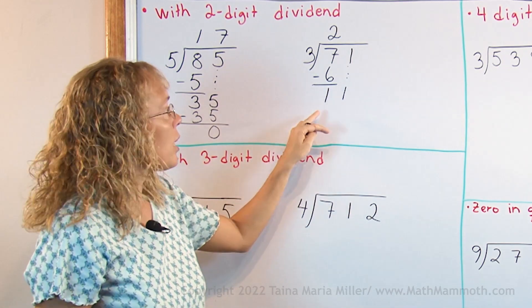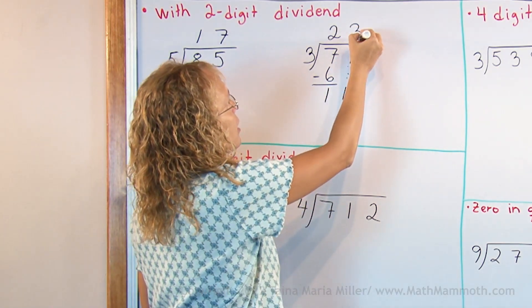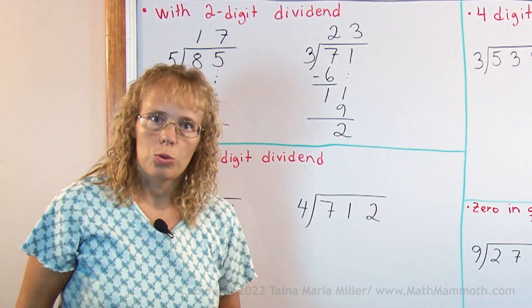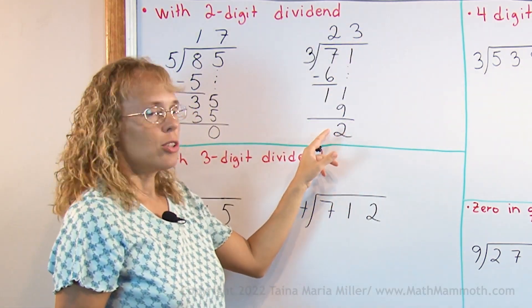Well, 3 times. Then 3 times 3 is 9, and subtract to find the remainder of 2. And now the final answer is 23, remainder 2.